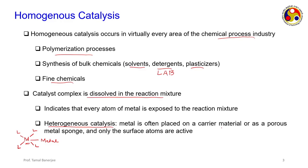In heterogeneous catalysis, metal is often placed on a carrier material. Recalling monoliths - there are parallel channels and the catalyst is coated on those channels. It is placed on carrier metals or as a porous metal sponge, and only the surface atoms are active. When coated, only the surface atoms interact with the reacting mixture. In homogeneous, all atoms are exposed; in heterogeneous, only surface atoms are exposed to the reaction mixture.